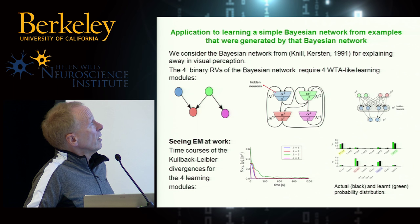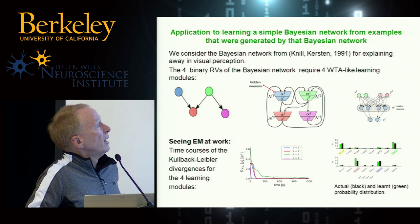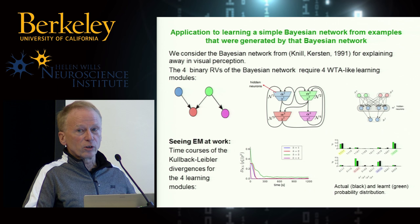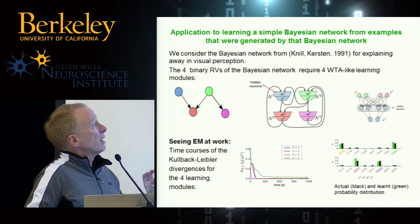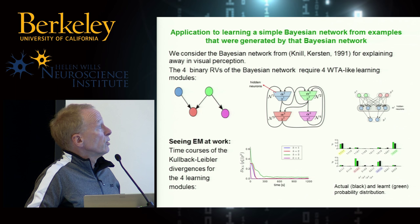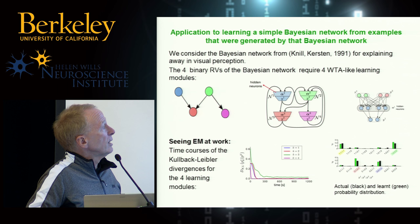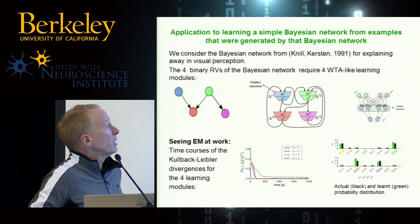The method of going from this Bayesian network to a network of neurons gives you four learning modules. Each looks like the one I showed, with winner-take-all-like circuits at its core. They're all continuously firing; no overhead control, timing, or clock is necessary. From the theory of EM, we're guaranteed that each module builds an internal model for the probability table. These are the Kullback-Leibler divergences for those four models — some green models don't quite hit zero, meaning there are approximation errors, probably because we didn't use a large enough number of neurons.